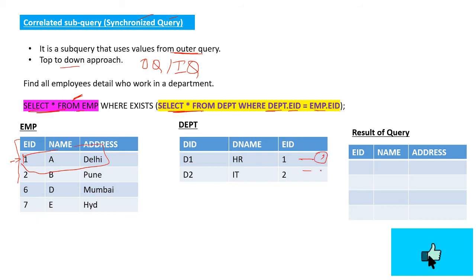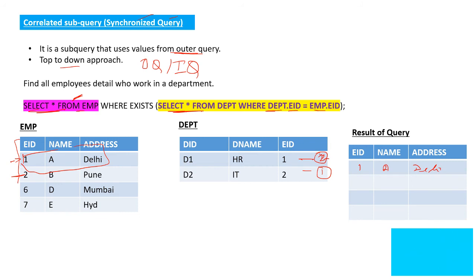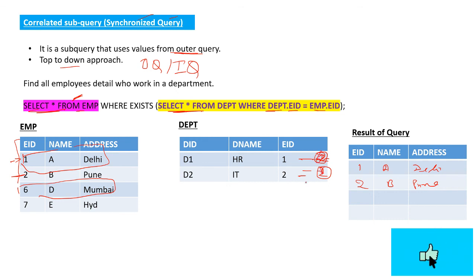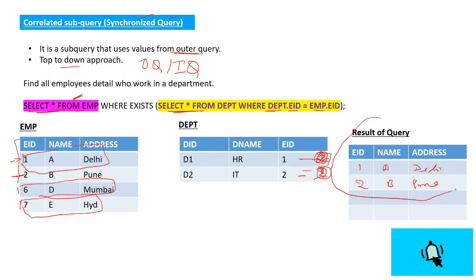It picks the first row and checks in the department table. Row 1 matches department D1, so it writes row 1 result 'A' and the city. Then it checks row 2 — the employee ID is not matching at first but matches the second row of the department table, so it writes '2 B' and 'Pune'. For row 6, it does not match any department row, so nothing is written. For row 7, it is also not matching, so it is not written. The final result contains only the matched rows.